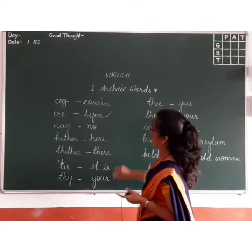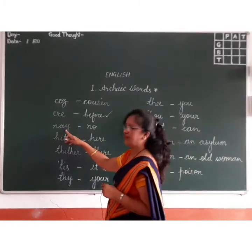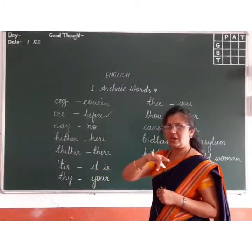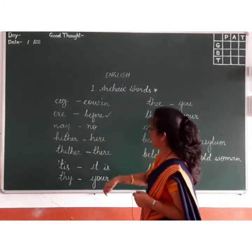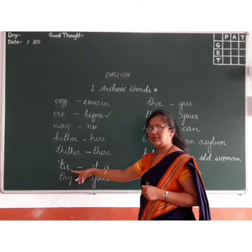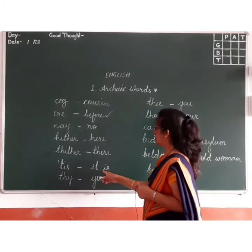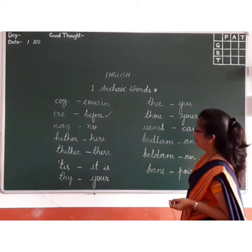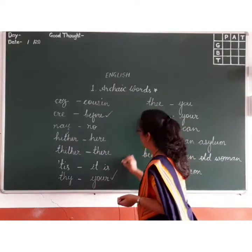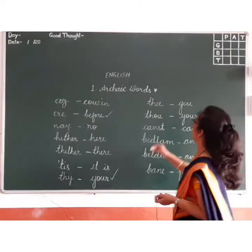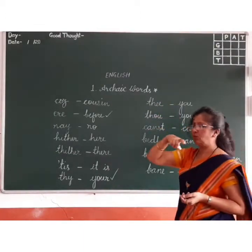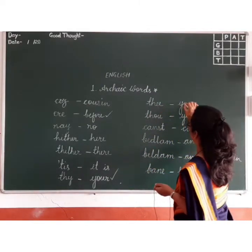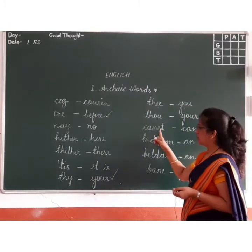Next, 'er' means before — we have seen this word in a poem last year. 'Nai' means no. 'Hither' means here and 'thither' means there — we came across these two words last year in 'Under the Greenwood Tree.' Then 'tis' means 'it is' — almost a contracted form and an archaic word. 'Thy' means your, and 'thee' means you.